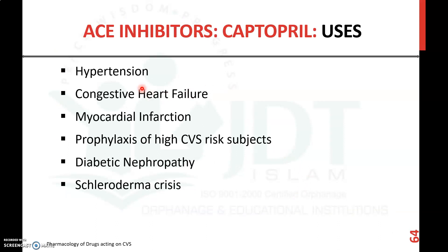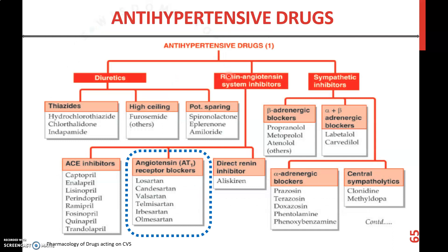ACE inhibitors are mainly used as the first-choice drug in hypertension, also in congestive heart failure, treatment of myocardial infarction, prophylaxis of high cardiovascular risk subjects, diabetic nephropathy, and scleroderma. That is all about ACE inhibitors.